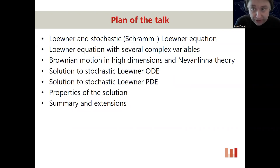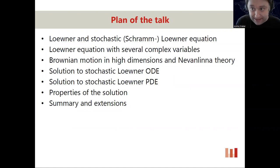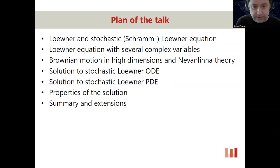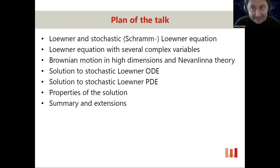I will present the Loewner equation — the non-stochastic version with several complex variables, a subject studied over past decades. Then I will discuss how to combine this with Nevanlinna theory, which has been connected to stochastic processes and Brownian motions. Using this connection, since Nevanlinna theory is well developed and recently studied in combination with several complex variables, I will present a solution both to the stochastic Loewner ordinary differential equation, which is the basis for SLE, and to the stochastic Loewner partial differential equation, along with some basic properties and extensions.